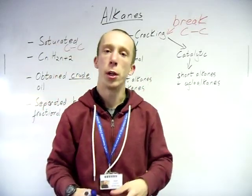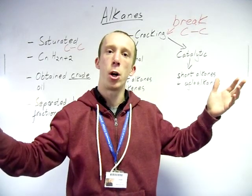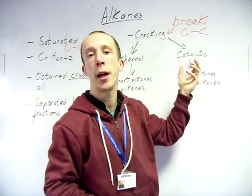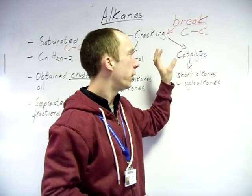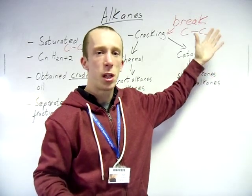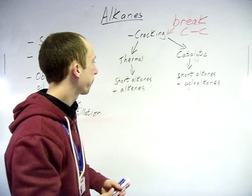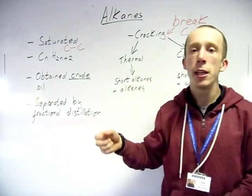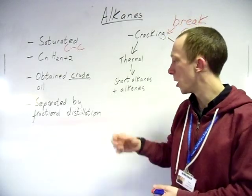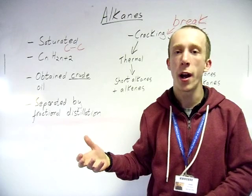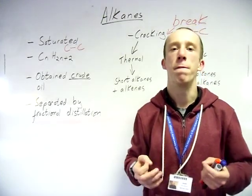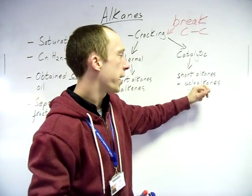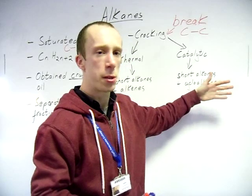There are two ways of doing it. One: thermal — just heat it up so high that the bond vibrates and snaps apart. Two: catalytic — you use a catalyst to achieve a lower temperature and lower pressure, so it just aids the breaking apart. You don't need to remember the actual catalysts for this, but it's always worthwhile knowing something extra. When you do thermal cracking, you tend to get short chain alkanes and alkenes. The alkenes are useful as building blocks — the easiest one to mention if asked what they could be used for is plastics. The catalytic route tends to get you cycloalkanes, which can sometimes be used for fuels as well.